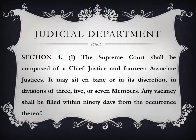Now the judicial department. According to Section 4 of Article 8, the Supreme Court shall be composed of a Chief Justice and 14 Associate Justices. It may sit en banc or in divisions of three, five, or seven members. Any vacancy shall be filled within 90 days. The Chief Justice and other justices may retire, resign, or be impeached.